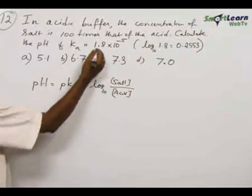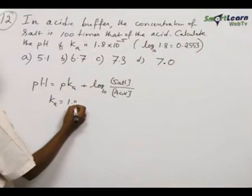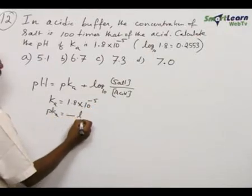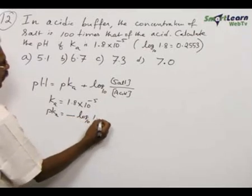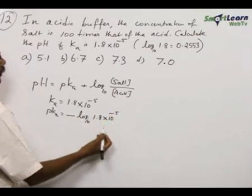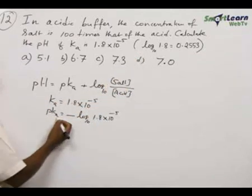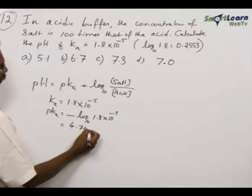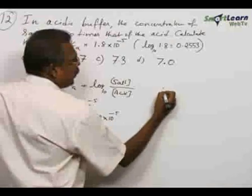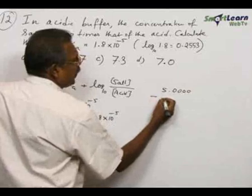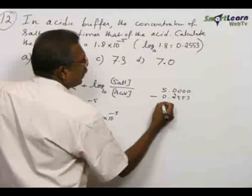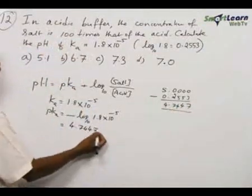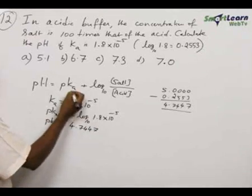In the problem, Ka is given as 1.8 × 10^-5. Therefore, pKa must be found out first. You have to take the negative logarithm to the base 10 of 1.8 × 10^-5. The log value of 1.8 is given. If you calculate, you get the value: pKa equals 4.7447, that is 5.0000 minus 0.2553. So 4.7447 is the pKa value. Now we can substitute here.